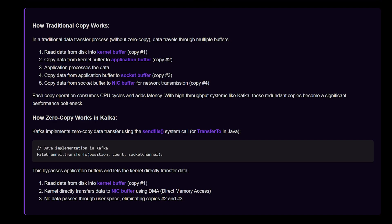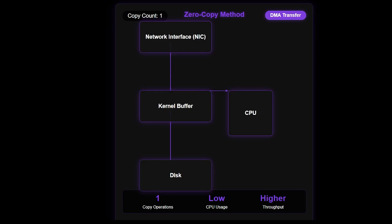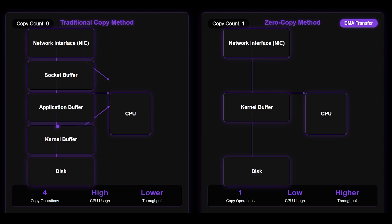With zero copy, the data is read from disk into the kernel buffer — that's the only copy. The kernel then directly transfers data to the network buffer using Direct Memory Access (DMA). There's no data passing through user space, eliminating copies two and three. The improvement in CPU usage, throughput, and memory bandwidth consumption is remarkable.